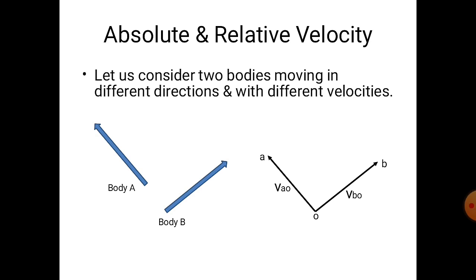V AO is the absolute velocity of body A and V BO is the absolute velocity of body B, as both are taken with respect to fixed point O. Now, joining point A and B by means of a straight line will indicate the relative velocities of the two bodies. If the arrowhead is pointing towards B, then the velocity is read as V BA, that is, velocity of body B relative to A.